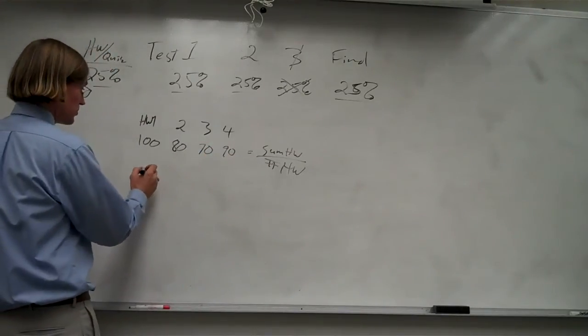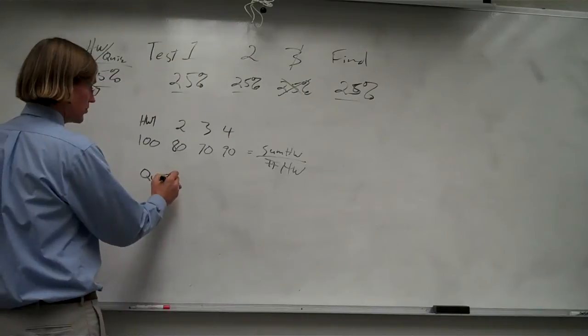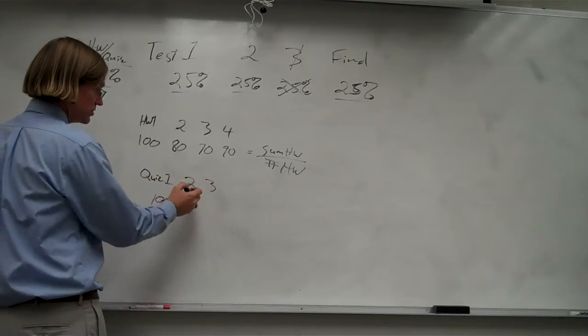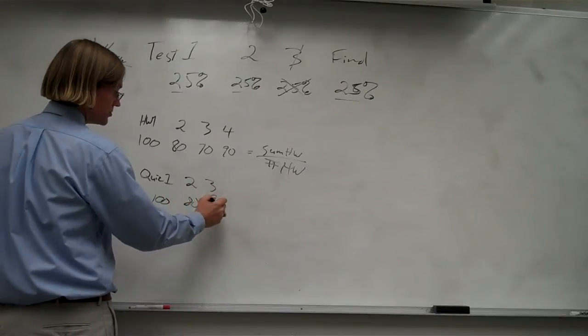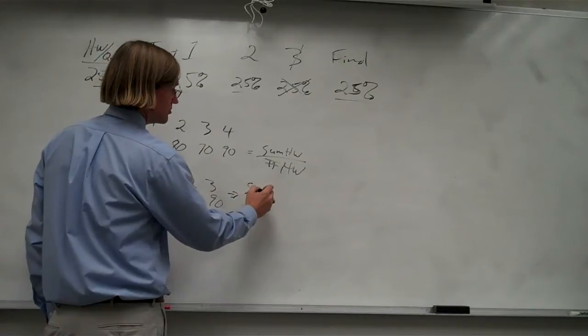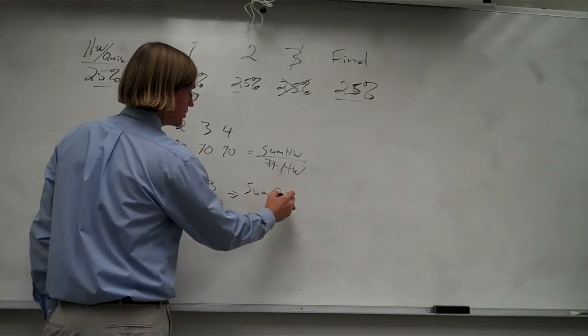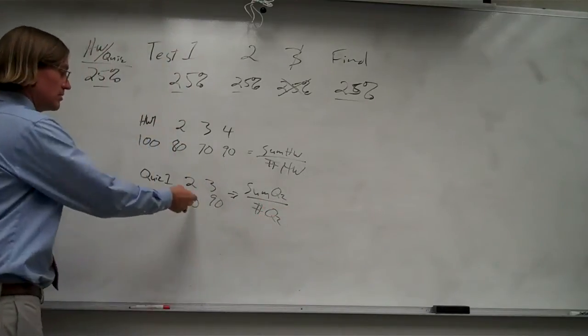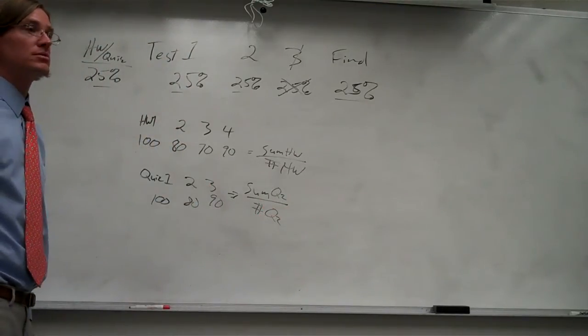And then you do the same thing with the quizzes. If we have three quizzes, you take your three quiz grades, add them up. The sum of the quiz grades divided by the number of quizzes, so divided by three.